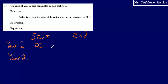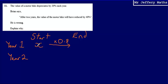If we start with X, at the end of the year the cost of the bike depreciates by 20%. If a bike is depreciating by 20%, we get from our starting amount to our ending amount by multiplying using a percentage multiplier. A 20% reduction means we multiply by 0.8. So X multiplied by 0.8 gives us 0.8X at the end of the first year.